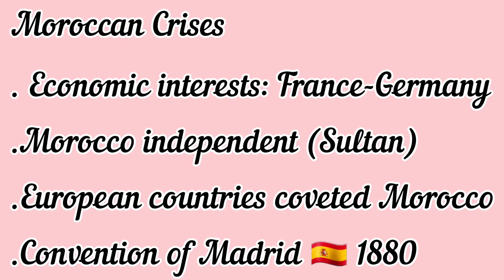The Moroccan crisis occurred because of a clash of economic interests between France and Germany. In the 20th century, Morocco was an independent country governed by a Sultan. But the problem was that many European countries coveted the territory. Why? Because Morocco was rich in mineral resources, especially iron and manganese.